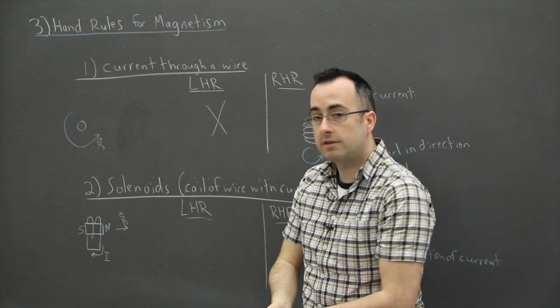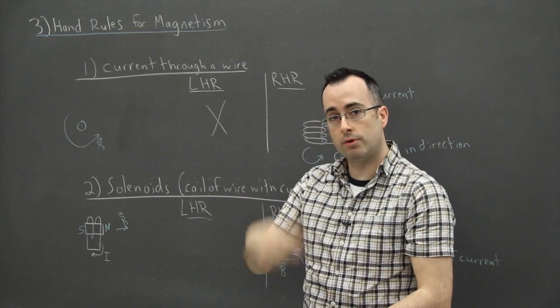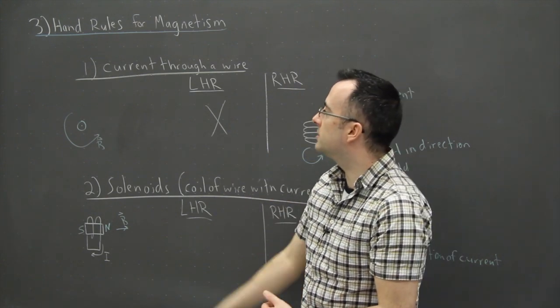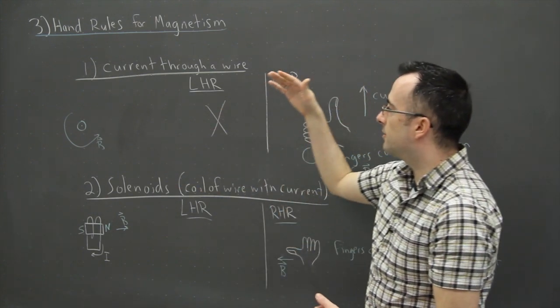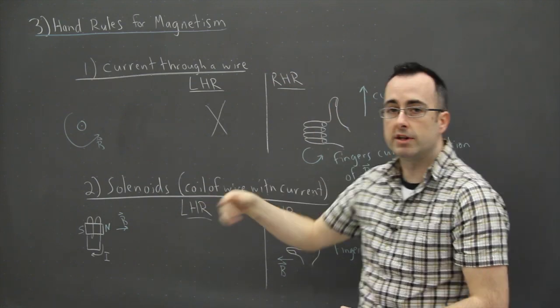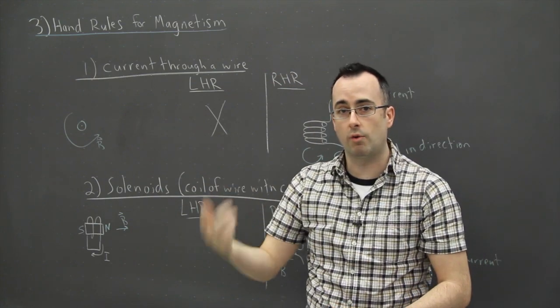So those are the first two hand rules — one for current through a wire, and one for solenoids, which is a coil of wire. There is a third hand rule, but these two are the main ones to start with.